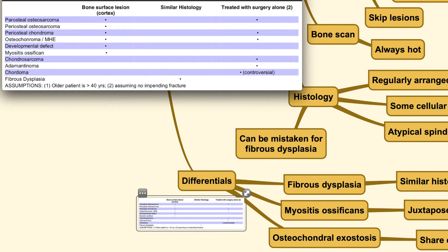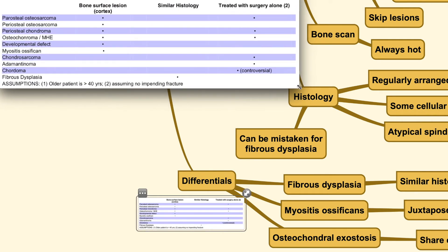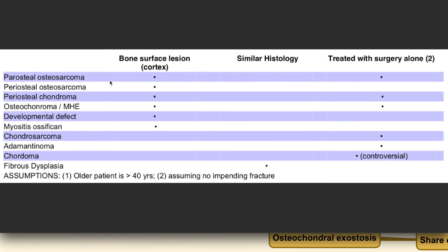This table differentiates the major lesions. It shows that bone surface lesions can come from parosteal or periosteal osteosarcoma, but also from myositis ossificans, which is a very benign condition, or from other benign lesions such as osteochondroma. Surgery is usually indicated for parosteal osteosarcoma and osteochondroma, but not for the myositis ossificans group.